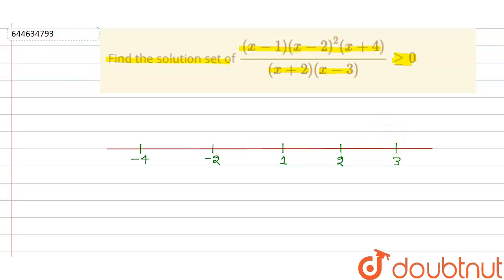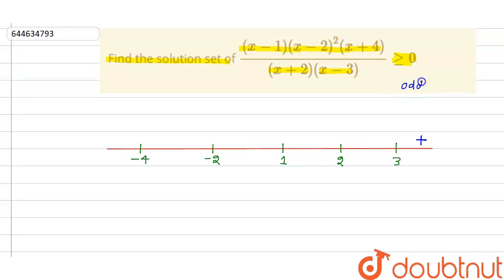At x greater than three, all factors are positive, so the expression is positive. Now the power of (x minus three) is odd, which means the sign will change — if it is positive here, it will be negative on the other side.